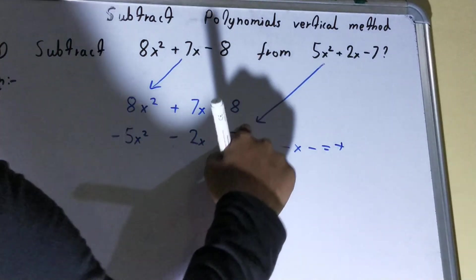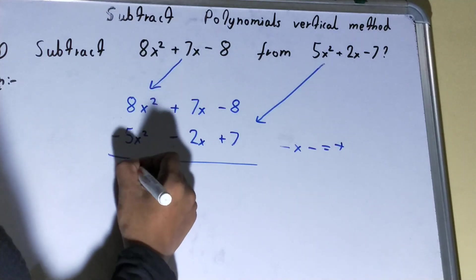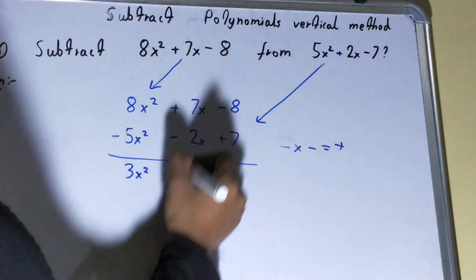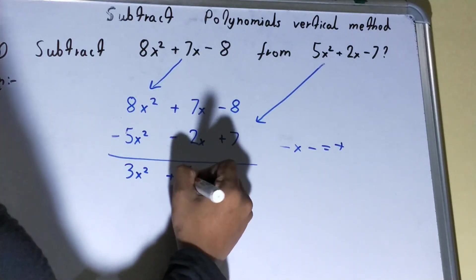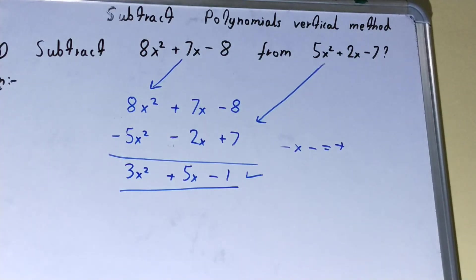...plus 5x, and minus 1. That's your final answer. So this is how you can subtract polynomials by the vertical method.